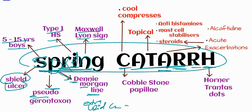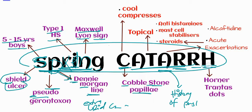Now taking the first, middle, and ending letters of 'CUTTER': with 'C' we remember cobblestone papillae, which is due to papillary hypertrophy. With 'A' we remember that history of atopy is present. With 'H' we remember Horner-Tranta's dots, which are a collection of eosinophils and epithelial debris on the limbus. This covers the signs and symptoms of Spring Cutter.